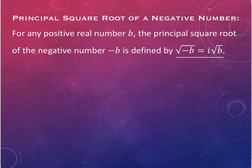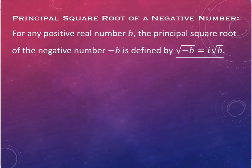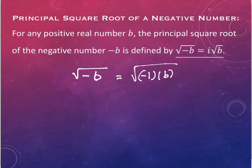One last piece we're going to take a look at today is called the principal square root of a negative number. If we have any positive real number b, then the principal square root of the number negative b is defined as follows: the square root of negative b is i times the square root of b. That's actually using a square root property you've seen before — this says I can rewrite this as negative 1 times b.